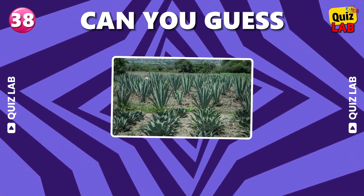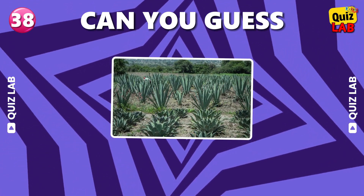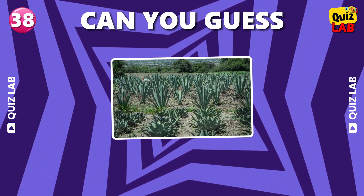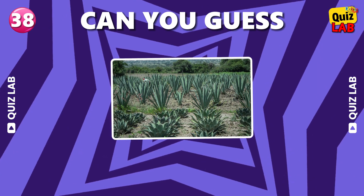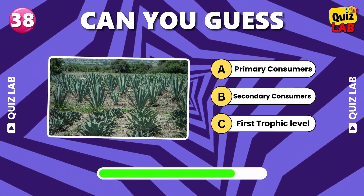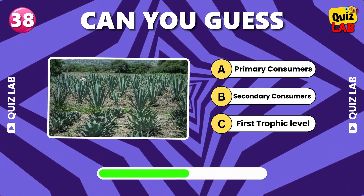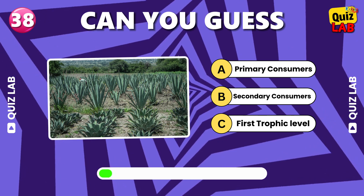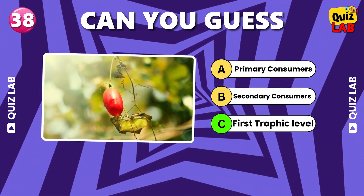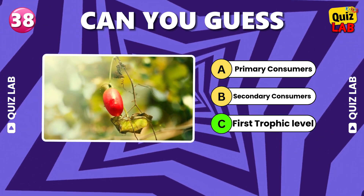Which level of the food web do producers belong to? First trophic level.